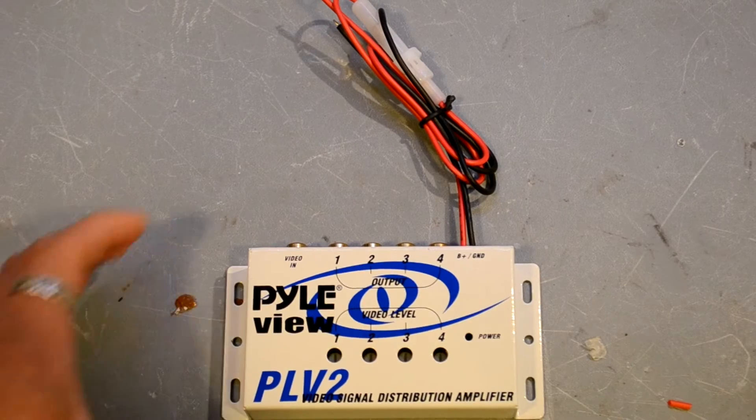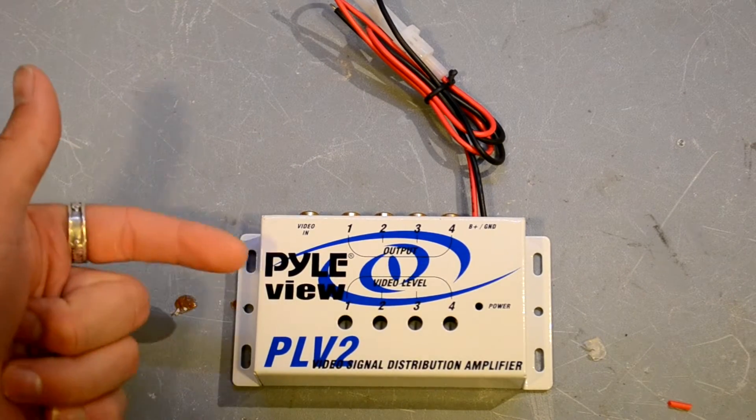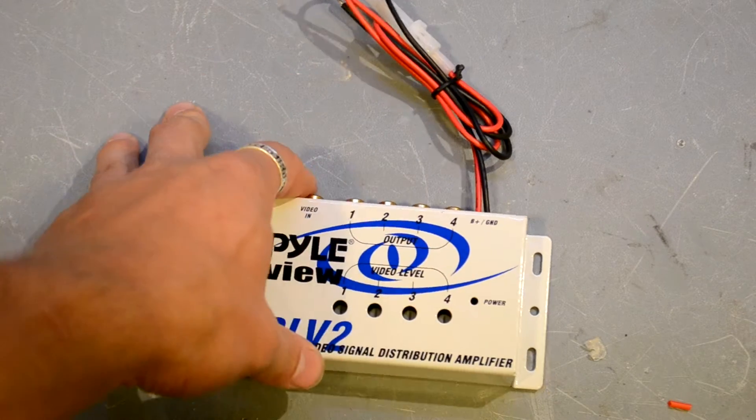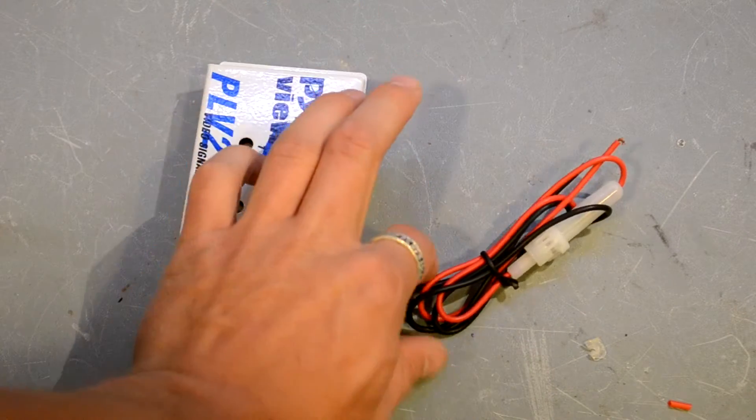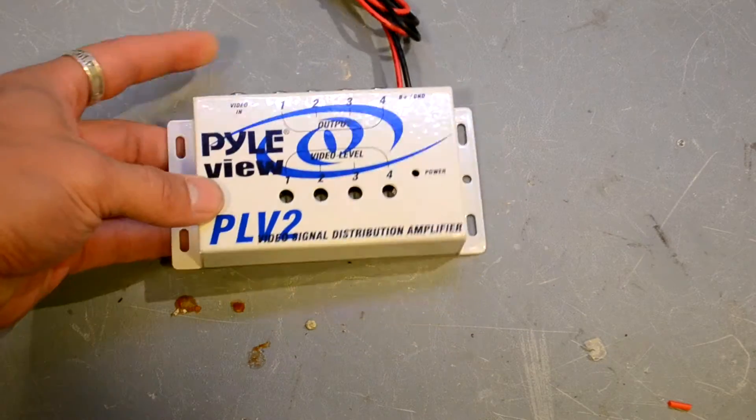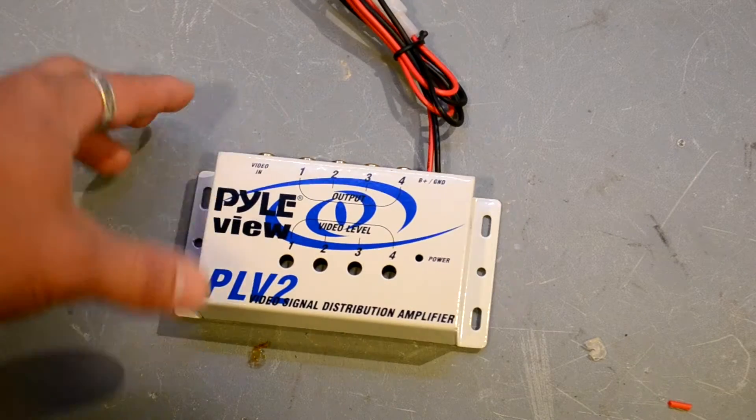What's going on YouTube, I got a great product review for you today. Right here in front of me I have the Pyle PLV2 video distribution amplifier. It's a mobile unit designed to run on 12 volts, so it's great for ground stations and ground station equipment, anything you run off a three-cell LiPo.